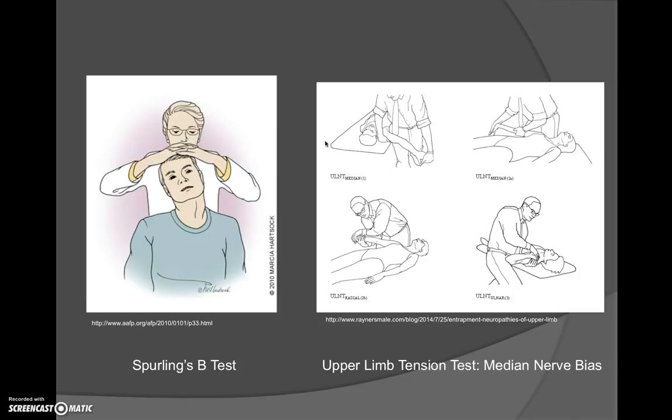To perform cervical distraction, the patient is supine. The therapist places their hands on the base of the occiput and applies a linear distraction force. If the patient's symptoms are reduced by cervical distraction, that is a positive finding.